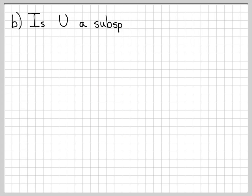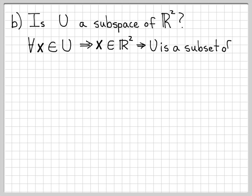The next question we have is, is the set u a subspace of R2? We know that R2 with normal vector addition and normal scalar multiplication is a vector space. U is obviously a subset of R2, because for every x that we have in u, x is in R2. So u is definitely a subset of R2, but is u a subspace of R2?